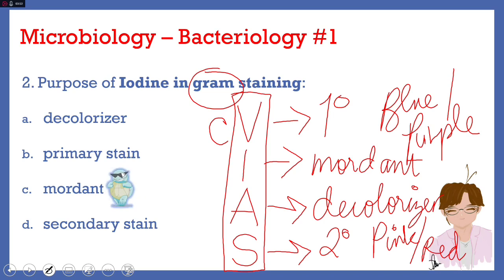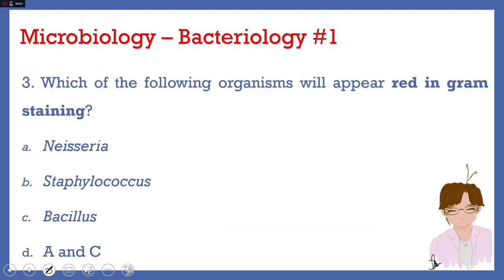To remember the components of gram staining one more time: crystal violet, iodine, acetone alcohol, and safranin — BIAS. Number two answer is letter C. Number three: which of the following organisms will appear red in gram staining? A) Neisseria, B) Staphylococcus, C) Bacillus, or D) A and C.